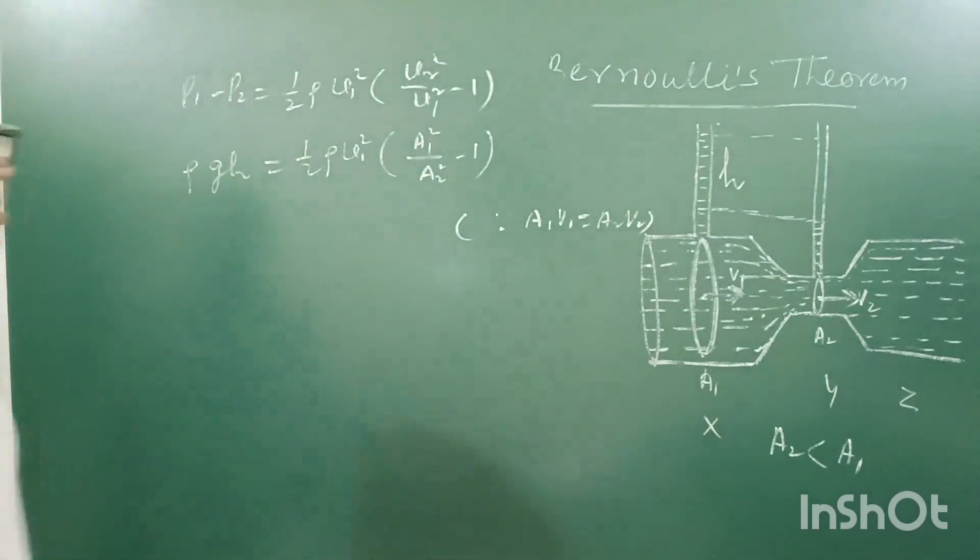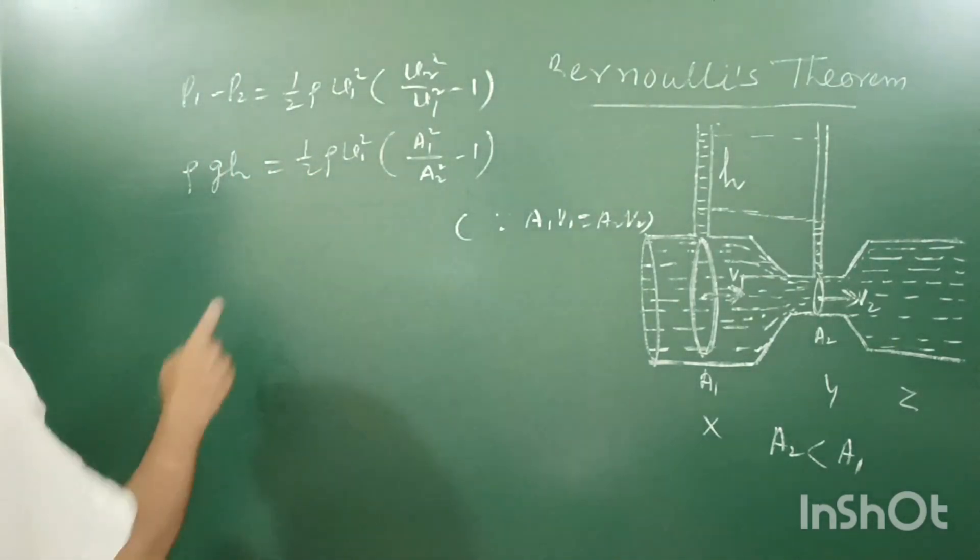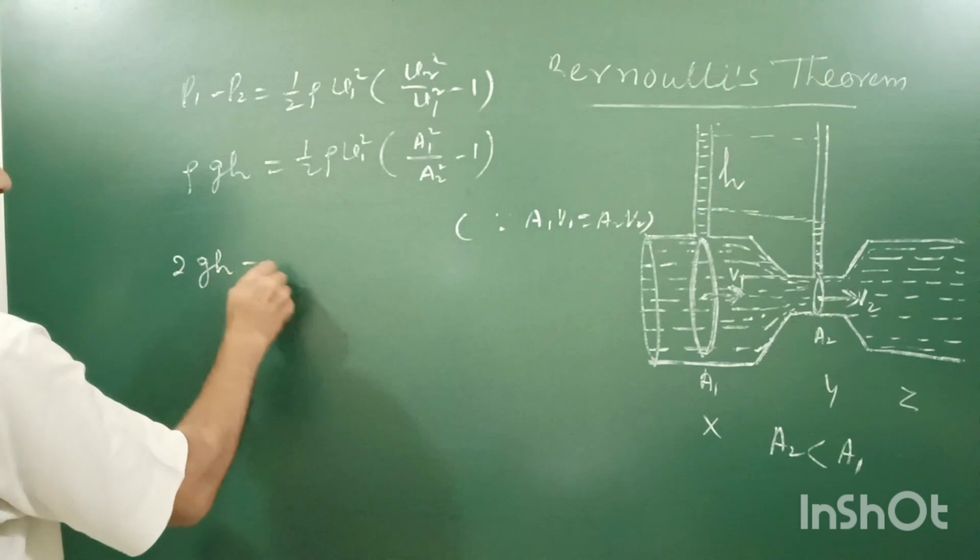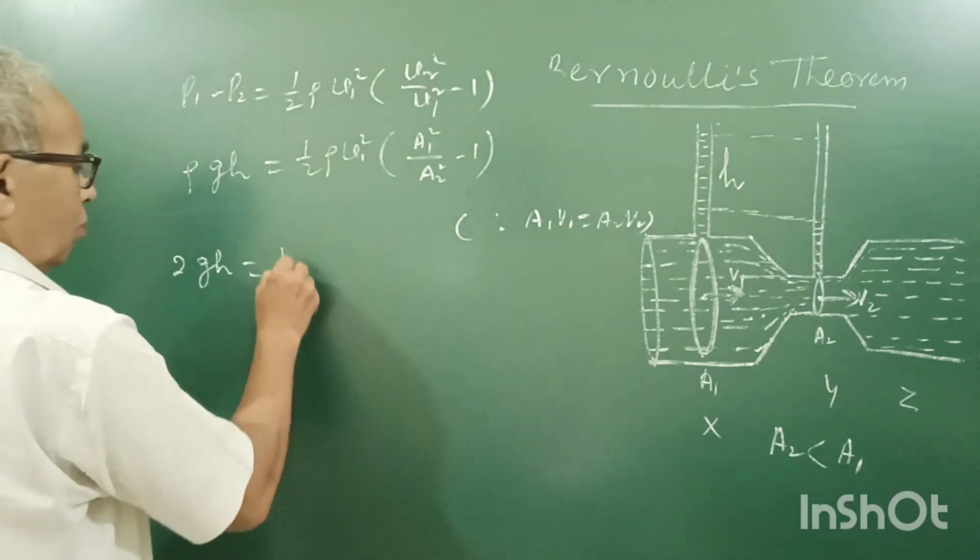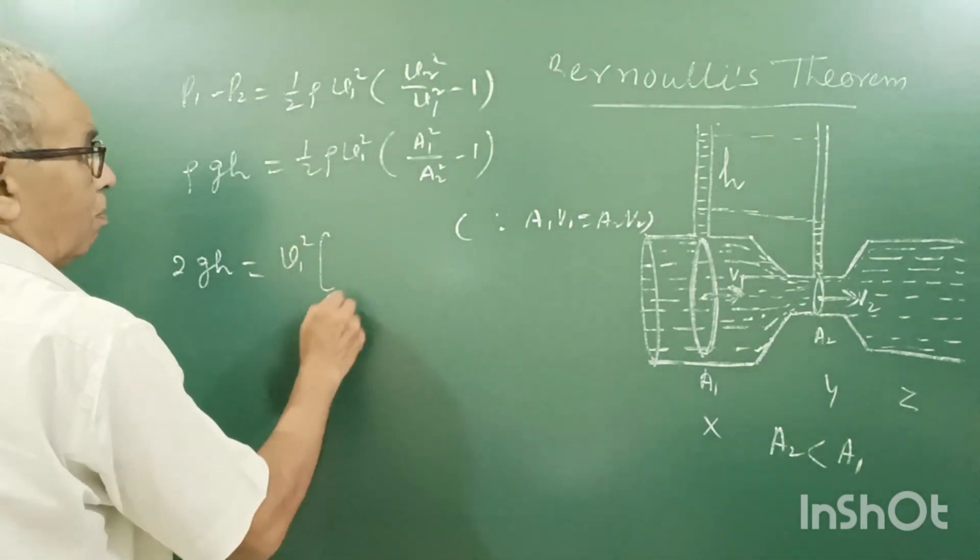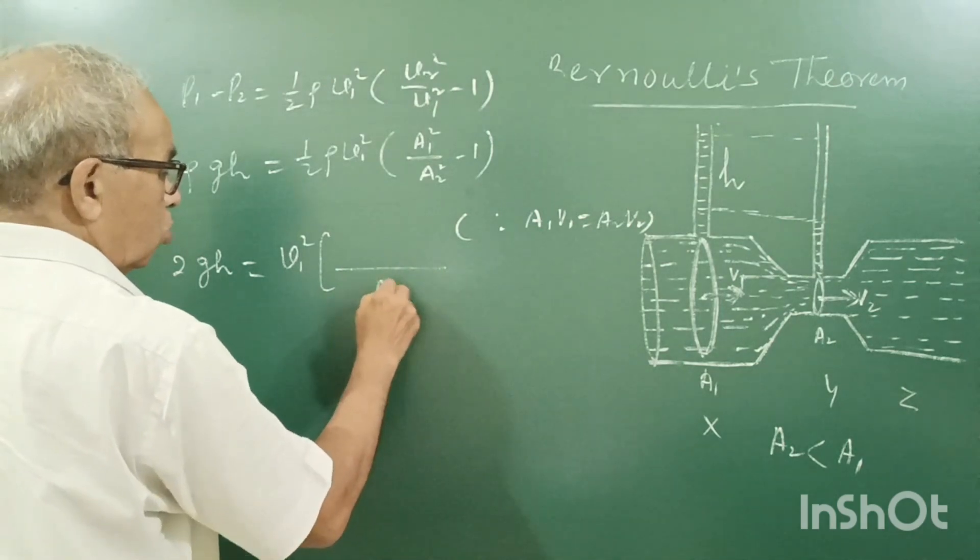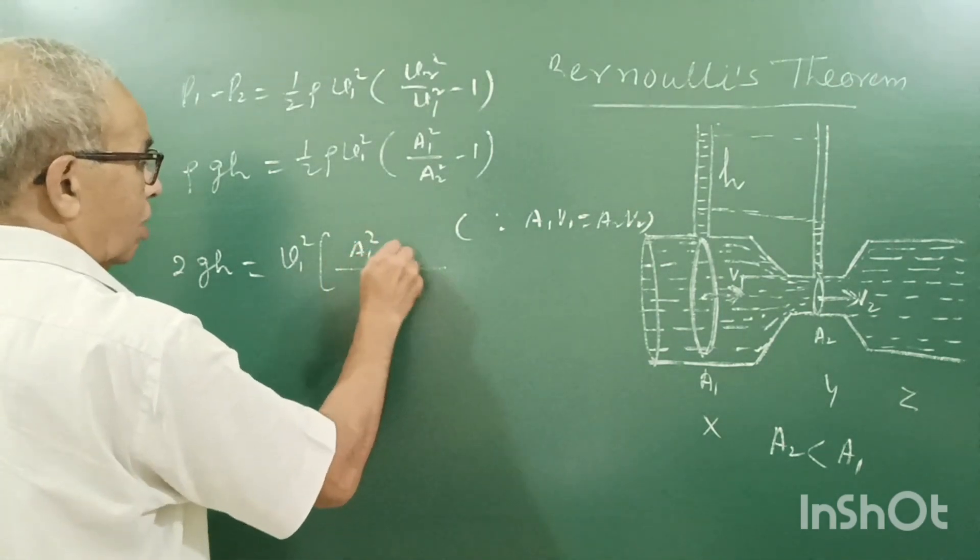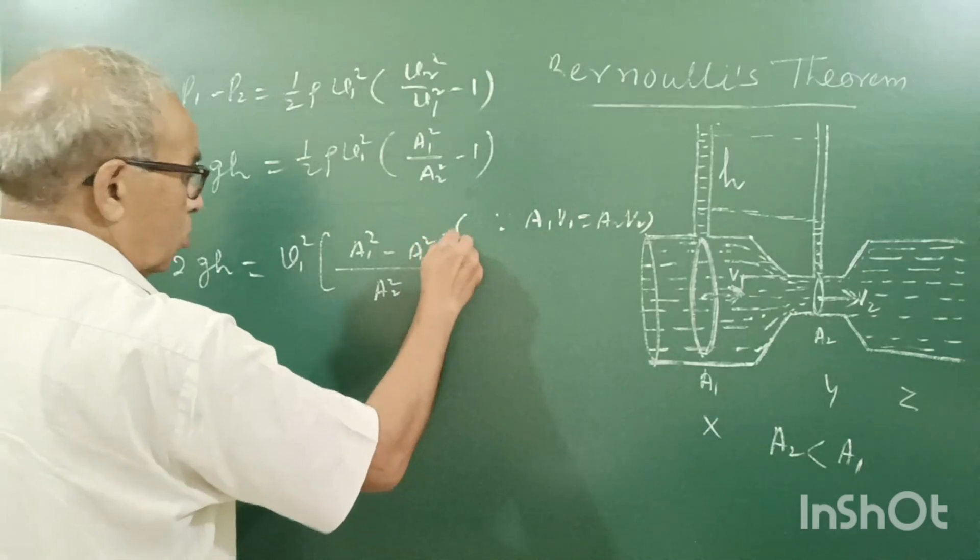Simple thing is, rho cancels. 2Gh equal to V1 square, bracket, taking LCM, A1 square minus A2 square upon A2 square.